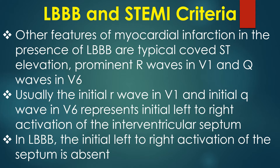Other features of myocardial infarction in the presence of LBBB are typical coved ST elevation, prominent R waves in V1, and Q waves in V6. Usually, the initial R wave in V1 and initial Q wave in V6 represent the initial left-to-right activation of the interventricular septum. In LBBB, this initial left-to-right activation of the interventricular septum is absent.